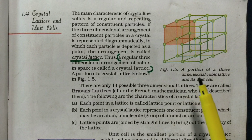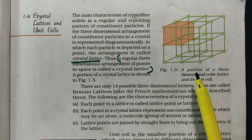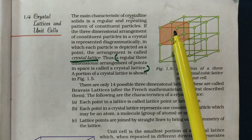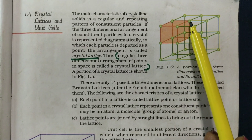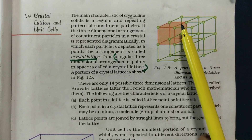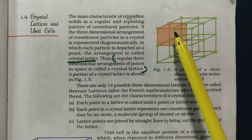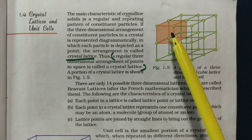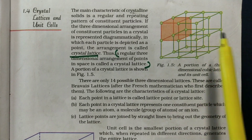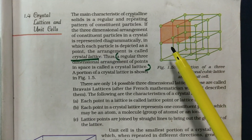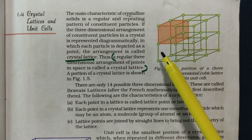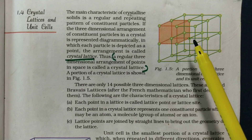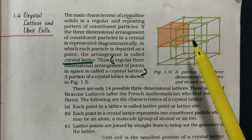Let's talk about crystal lattice. In crystalline solids, particles are arranged in a crystalline pattern. It is arranged in a 3-dimensional array, which is a 3-dimensional arrangement.